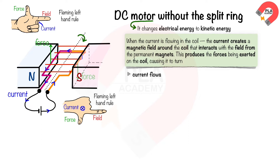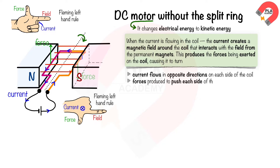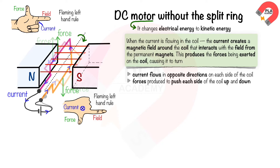As current will flow in opposite directions on each side of the coil, the force produced from the magnetic field will push one side of the coil up and the other side of the coil down. This will cause the coil to rotate, and it will continue to rotate until it is in the vertical position.